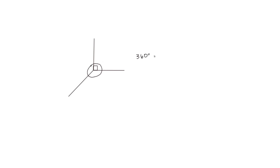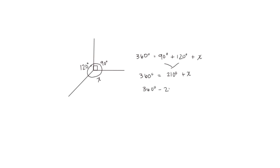We first of all know that our first angle is 90 degrees because it's a right angle. We measure the other angle with a protractor and find it's 120 degrees. The unknown angle is what's left. Since we have three angles, we add together the angles we already know and get 210 degrees. So 210 degrees plus x equals 360 degrees, meaning 360 minus 210 gives us 150 degrees. Our unknown angle x is 150 degrees.